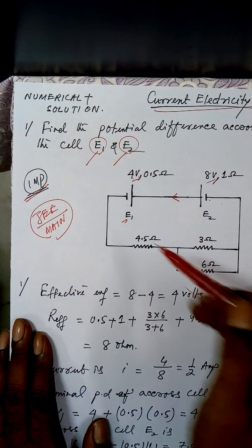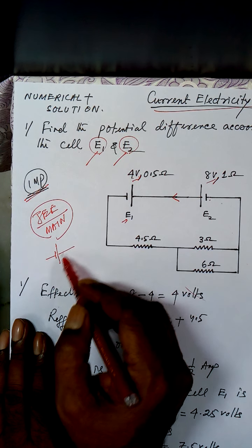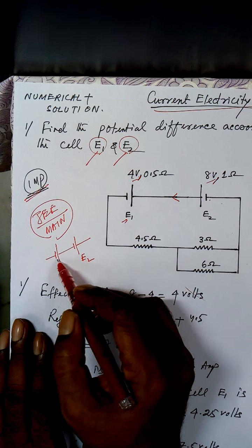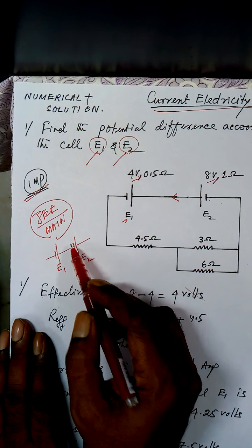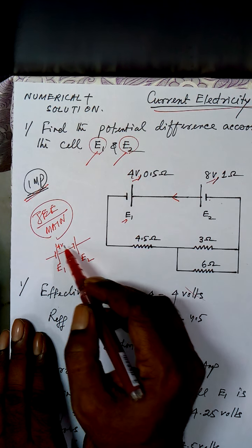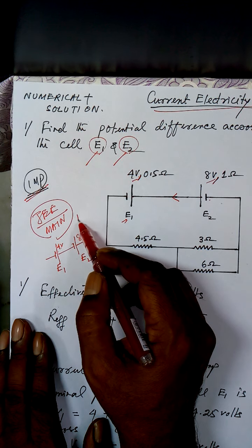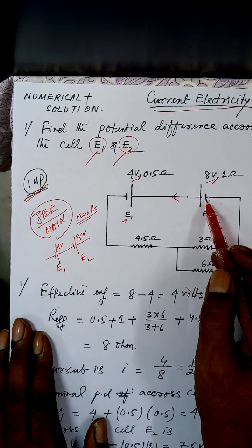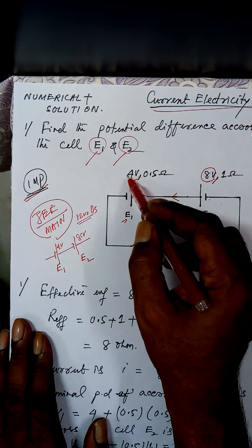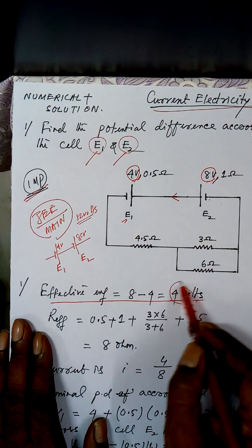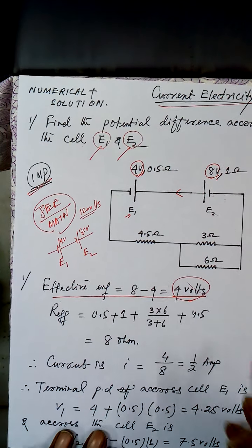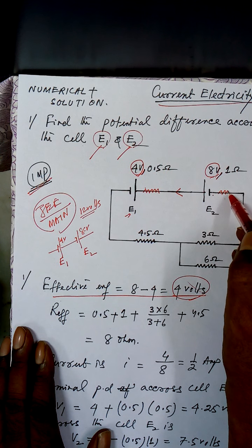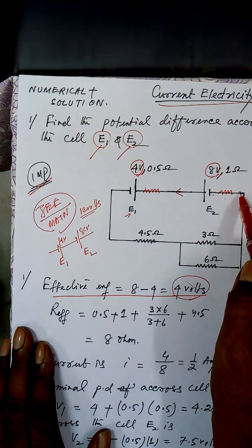E2 is at a higher potential, so it will send current to E1. If E1 and E2 had been connected with matching polarities in the usual series fashion, the effective EMF would have been 8 plus 4 equals 12V. But since the positive terminal of one is connected to the positive terminal of the other, the effective EMF is 8 minus 4 equals 4V.